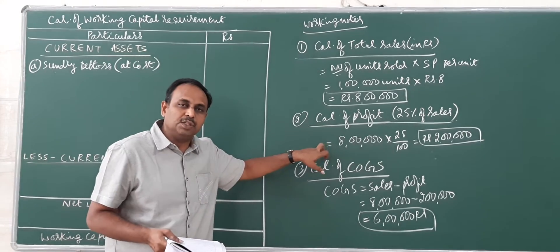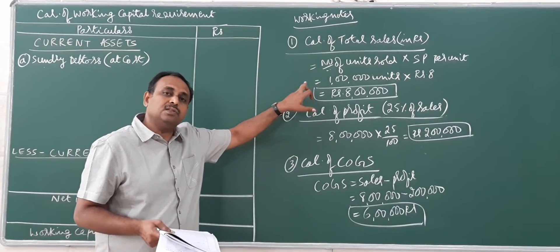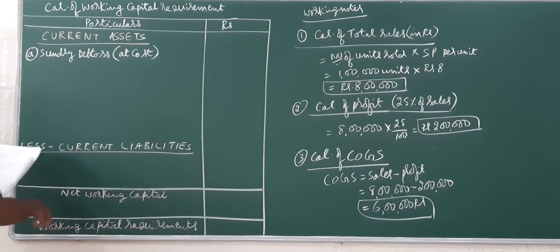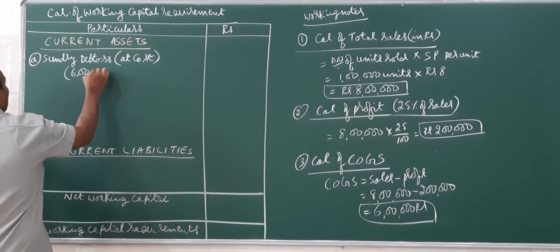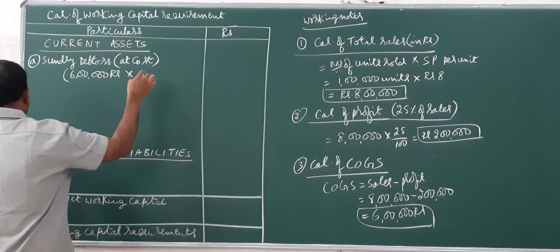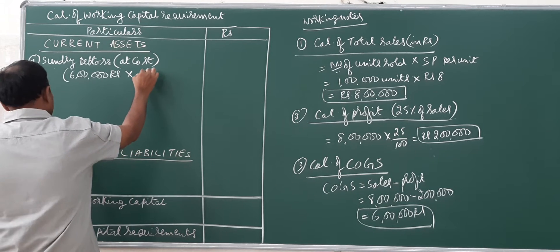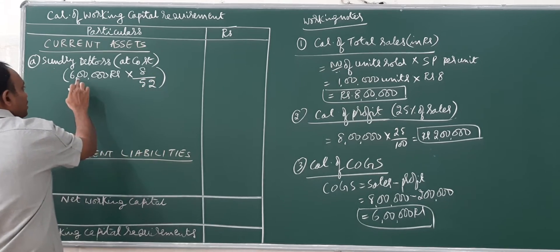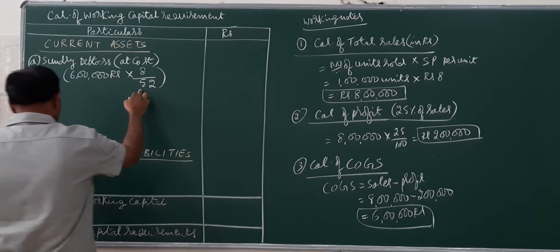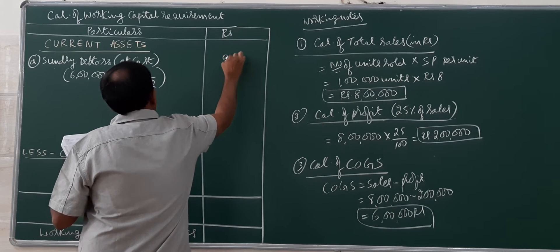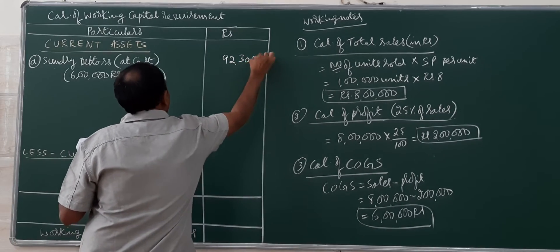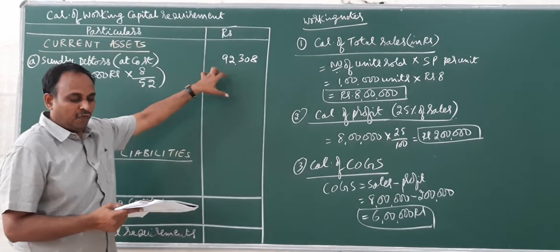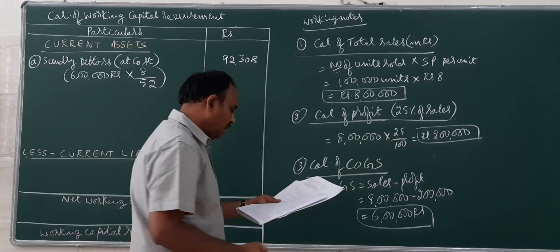Since cost can be found as 6 lakhs, we calculate debtors on cost. If profit information were not available, we could calculate debtors on sales of 8 lakhs, but here we use cost. Average credit period allowed to customers is 8 weeks; there are 52 weeks in a year. So sundry debtors equals 6 lakhs multiplied by 8 divided by 52, which gives rupees 92,308.